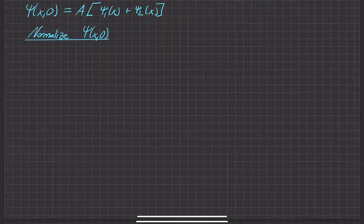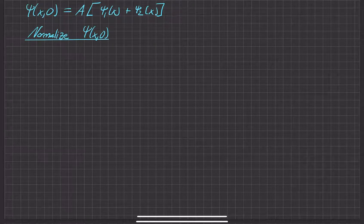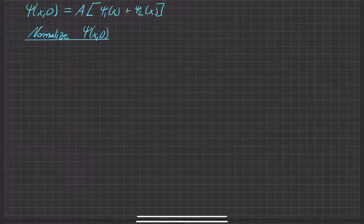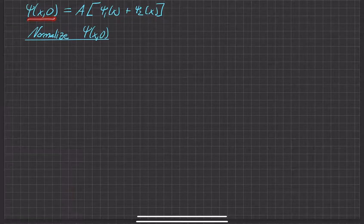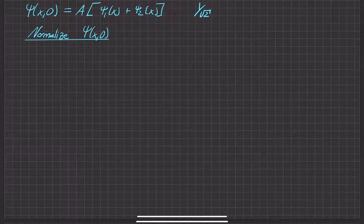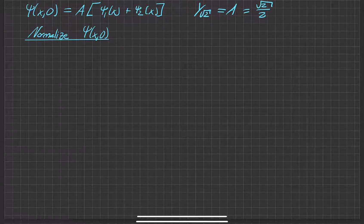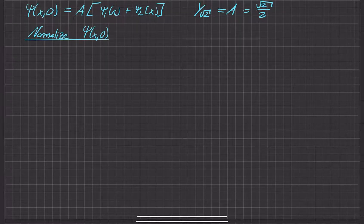Before we even start to normalize the wave function — to solve for this coefficient quantitatively — we can get an idea qualitatively of what it's going to be. Since it's a superposition shared equally by both, we know it's an equal amount of each wave function. So that means it's one half: half the time we expect one wave function, half the time the other. Since the coefficients squared give the probability, we expect the coefficient `a` to equal one over the square root of two, or equivalently the square root of two over two, so that squaring it gives one half.